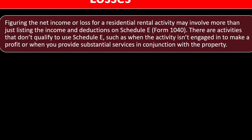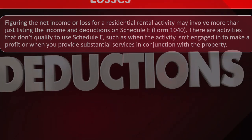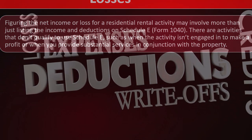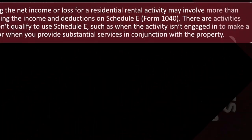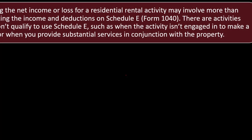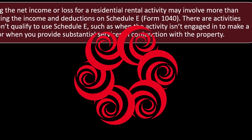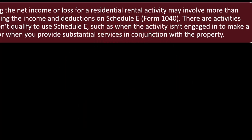Figuring the net income or loss for a residential rental activity may involve more than just listing income and deductions on Schedule E, Form 1040. We're going to have to get the bookkeeping done just like any other business — it's basically an income statement. We populate that income statement usually into the Schedule E, not the Schedule C. The Schedule E only has an income statement; we don't typically have the balance sheet, although we might have depreciation schedules to deal with.